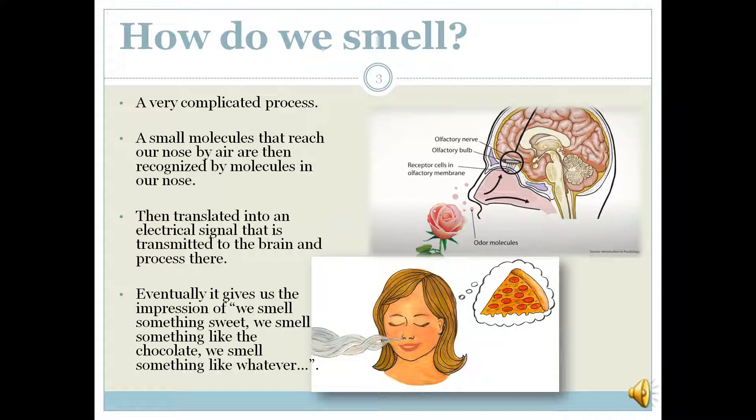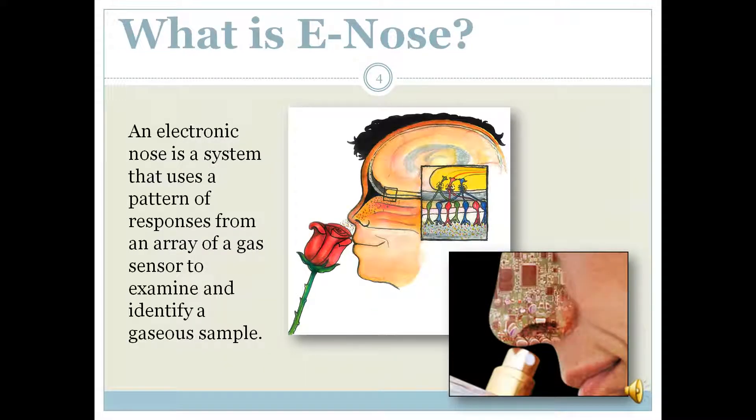How do we smell? Smelling is a very complicated process where small molecules that reach our nose by air are then recognized by molecules in our nose and are then translated into an electrical signal that is transmitted to the brain. The process there eventually gives us the impression that we smell something sweet, like chocolate, or whatever.